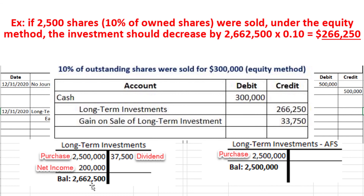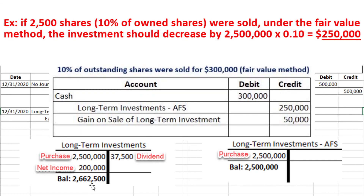We use a gain here because the investment was sold for more than the current balance in the investment account. The journal entry for the fair value method would be very similar, except 10 percent of the outstanding investment would only be 250,000 dollars, making the gain equal to 50,000 dollars. That wraps up our journal entries comparing the equity method and the fair value method.